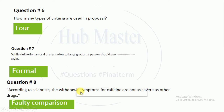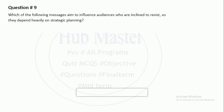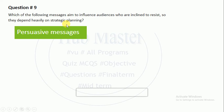According to scientists, the withdrawal symptoms for caffeine are not as severe as other drugs — so 'faulty comparison' is the right option. Which of the following messages aims to influence audiences inclined to resist, depending heavily on strategic planning? The persuasive message is used for strategic planning.